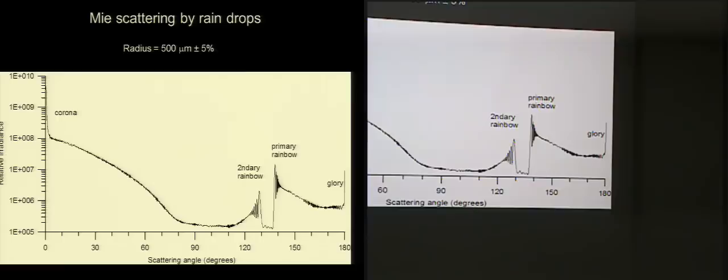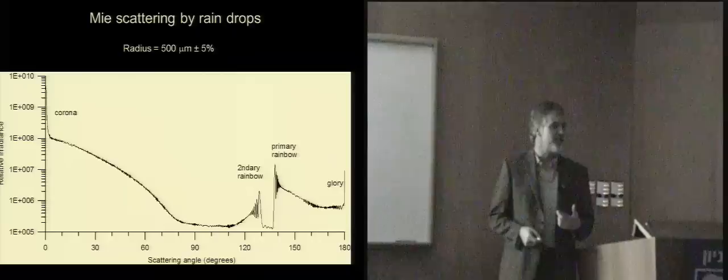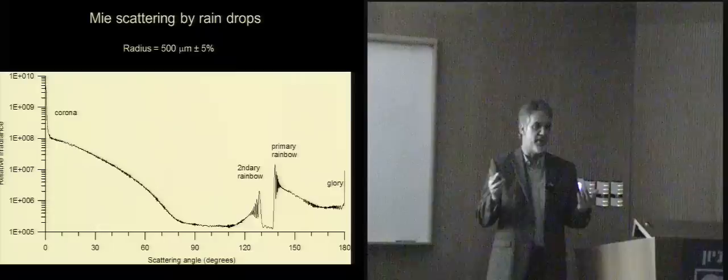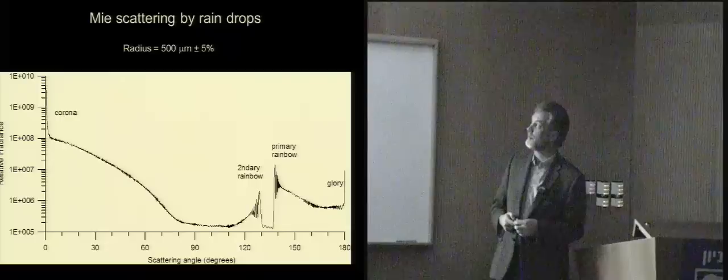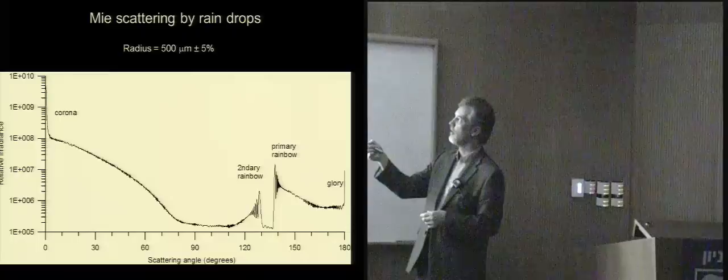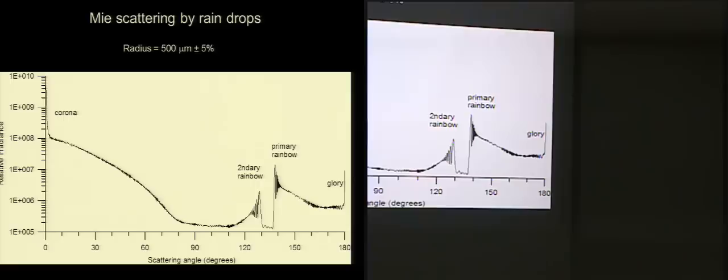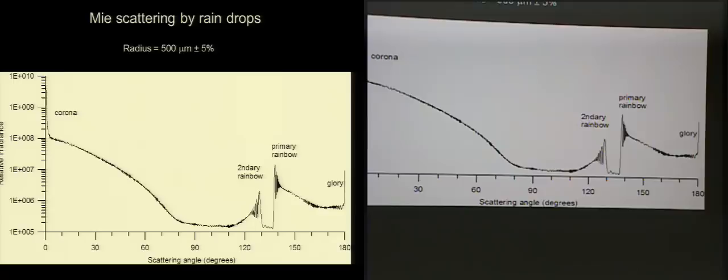The first message is that you don't need geometric optics — it's great for a simple explanation, but all the details of the rainbow are pretty much captured in Mie scattering as well. I used half-a-millimeter radius droplets with a small spread in size. Without a spread in radius you get really sharp oscillating features that tend to be washed out with a distribution of sizes. Nevertheless, those features do appear, and we'll look for them in pictures in just a moment.